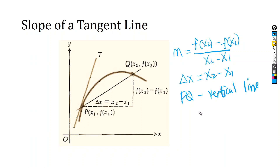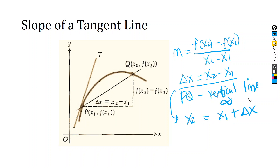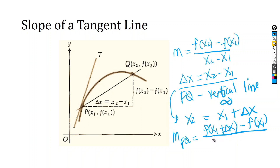We all know that the slope of a vertical line is undefined. From this equation, we can say that x2 is equal to x1 plus delta x. So we can rewrite the slope equation as m_PQ equals f(x1 plus delta x) minus f(x1), all over delta x. This is now our equation for the slope of the secant line.